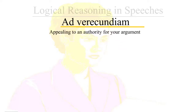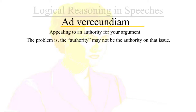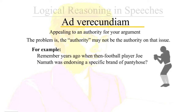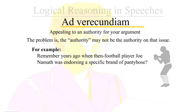Ad verecundiam involves appealing to an authority for your argument. The problem is the authority may not be the authority on that specific issue. For example, years ago football player Joe Namath was endorsing a specific brand of pantyhose — Joe may not have been a real expert on that issue.